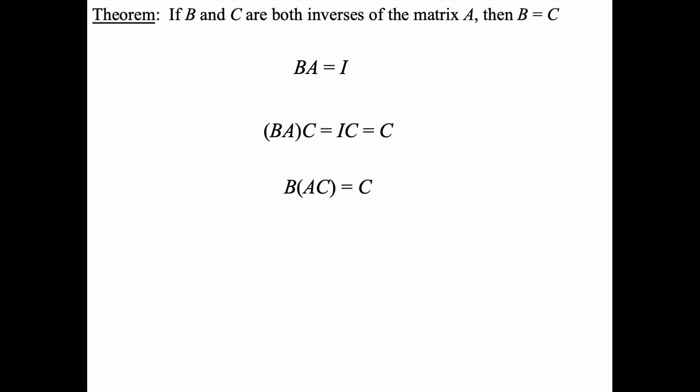But wait a second. C was said to be an inverse of A. Well since that's the case, A times C is simply the identity. So B times the identity equals C or B equals C. So we have shown that actually these two inverses are the same inverse. So there's only one unique inverse. Quite easily done indeed.